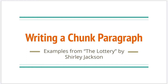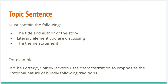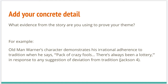Let's look at two examples from the short story 'The Lottery' by Shirley Jackson. A reminder of the structure: your topic sentence will state the theme. For this assignment, the topic sentence must include the title and author of the story, the literary element you are discussing, and the theme statement. Here's my example: 'In The Lottery, Shirley Jackson uses characterization to emphasize the irrational nature of blindly following traditions.' Title, author, literary element, and theme statement.